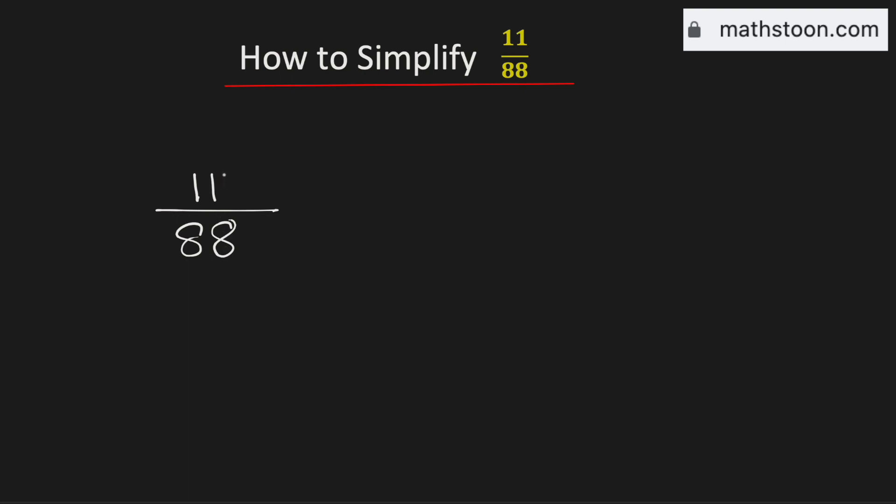To simplify it, we will divide both the numerator and the denominator by their common divisors. See that both 11 and 88 are divisible by 11.